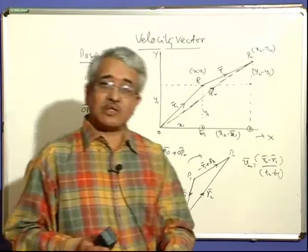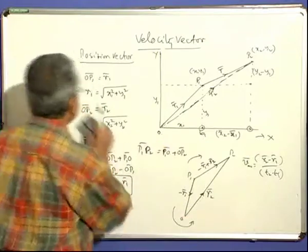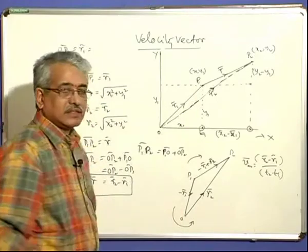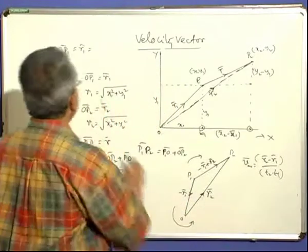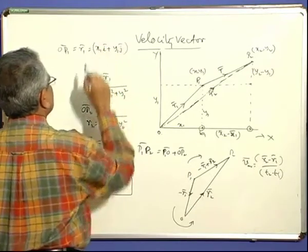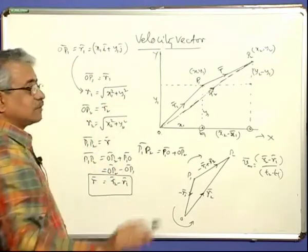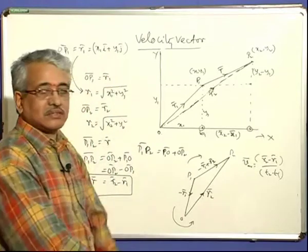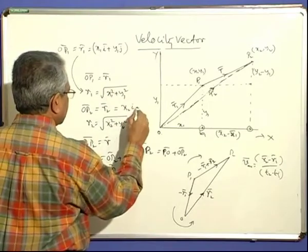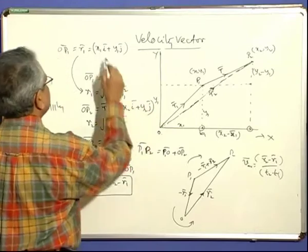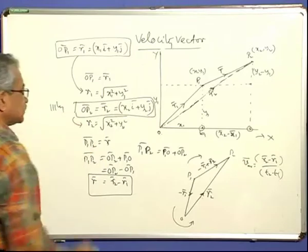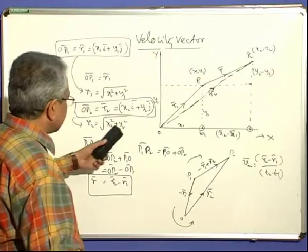How would you understand this method better? We have unit vector notation — you can also represent any vector in the form of unit vector representation. OP1 can be represented as r1 with coordinates x1 and y1. Thinking of unit vectors i and j along the x and y axes, we can write it as x1 i plus y1 j. That means r1 equals the square root of x1 squared plus y1 squared. So you can represent the position vector in terms of unit vector notation. Similarly, the second position vector r2 equals x2 i plus y2 j.